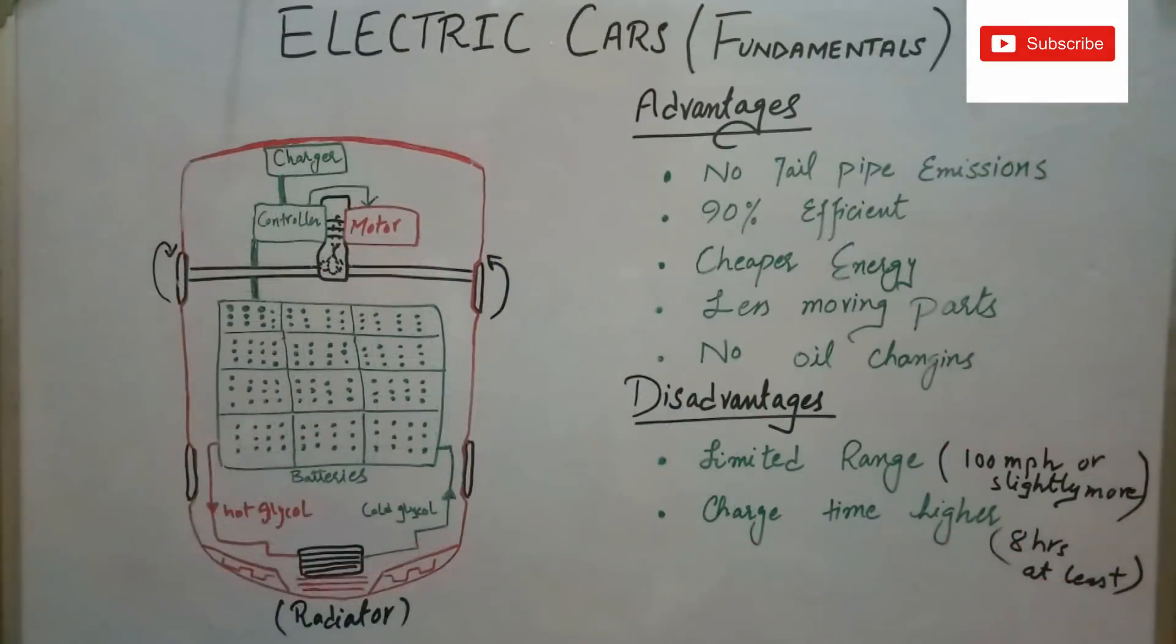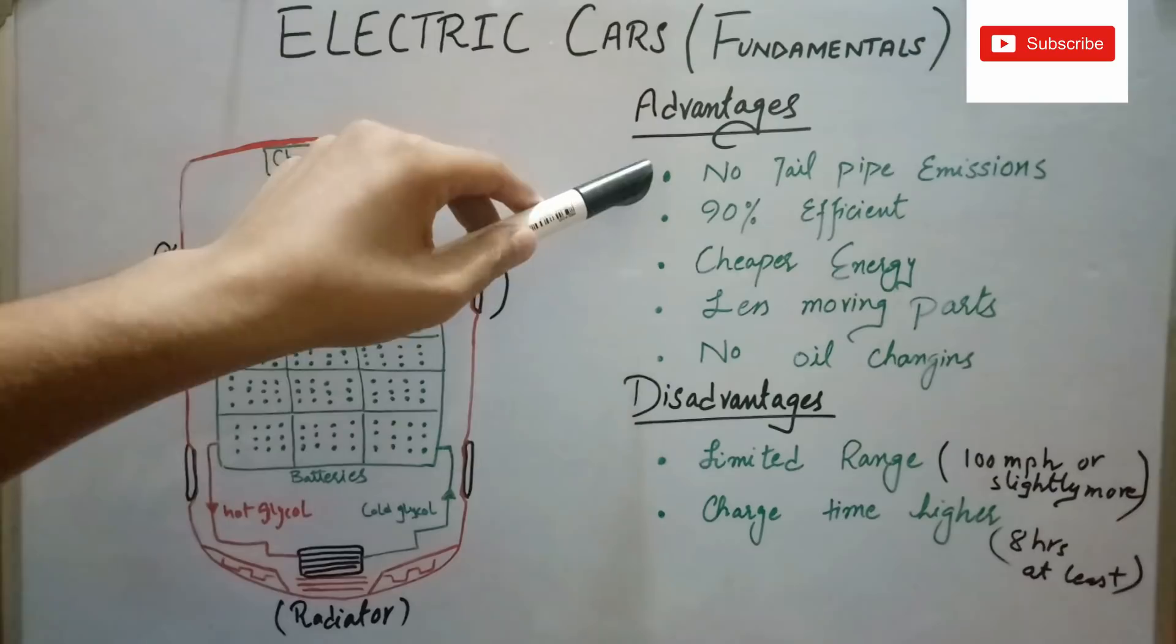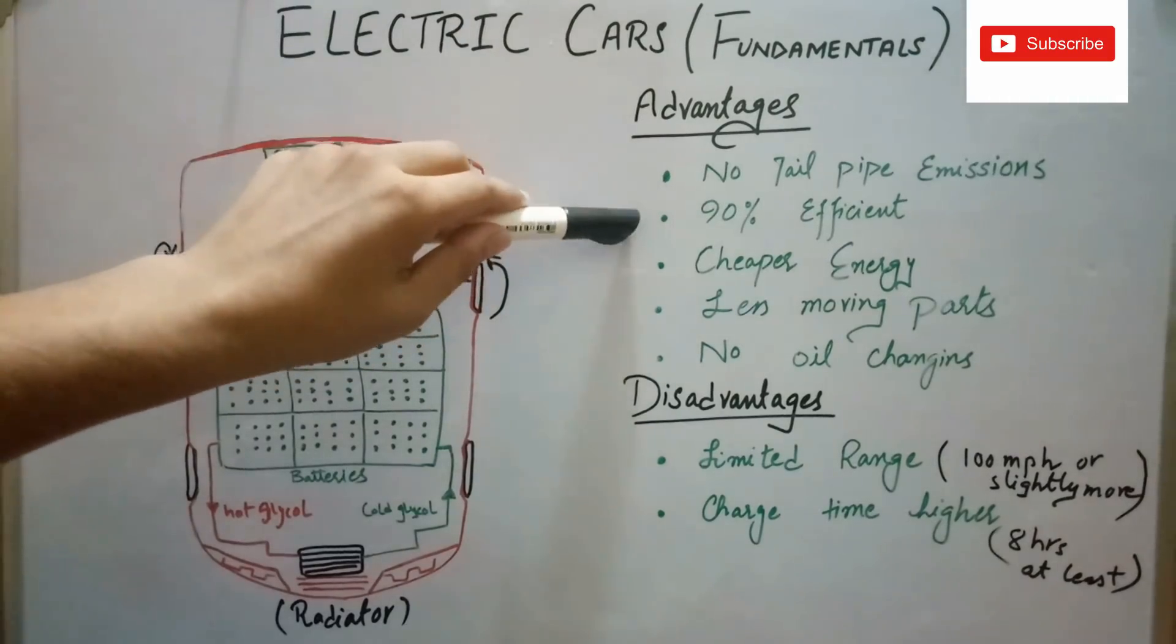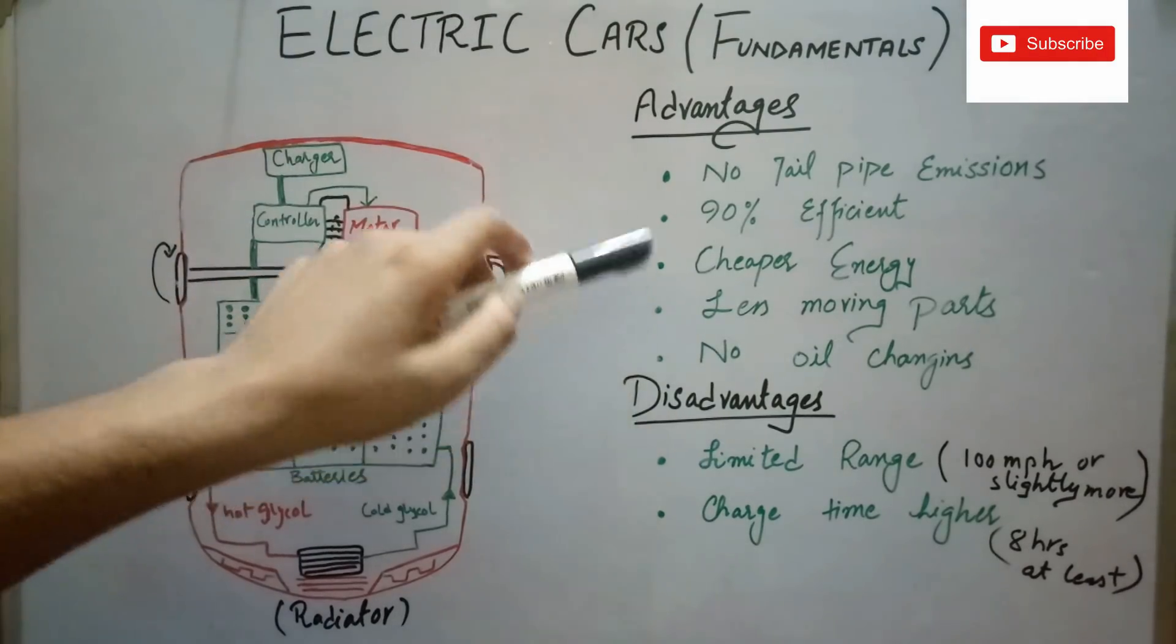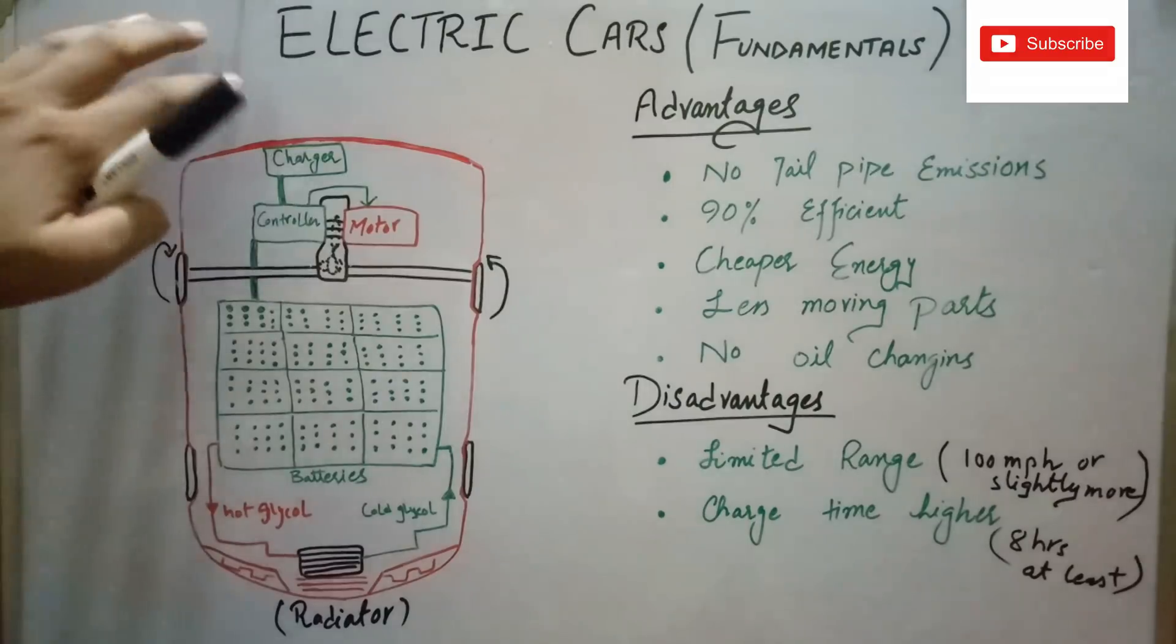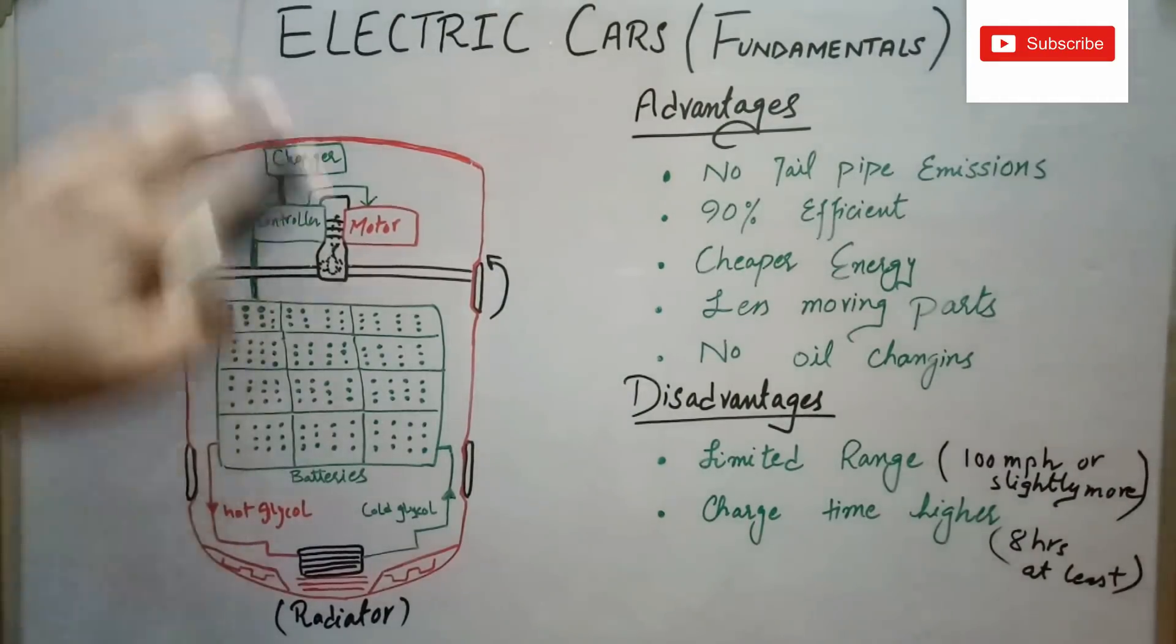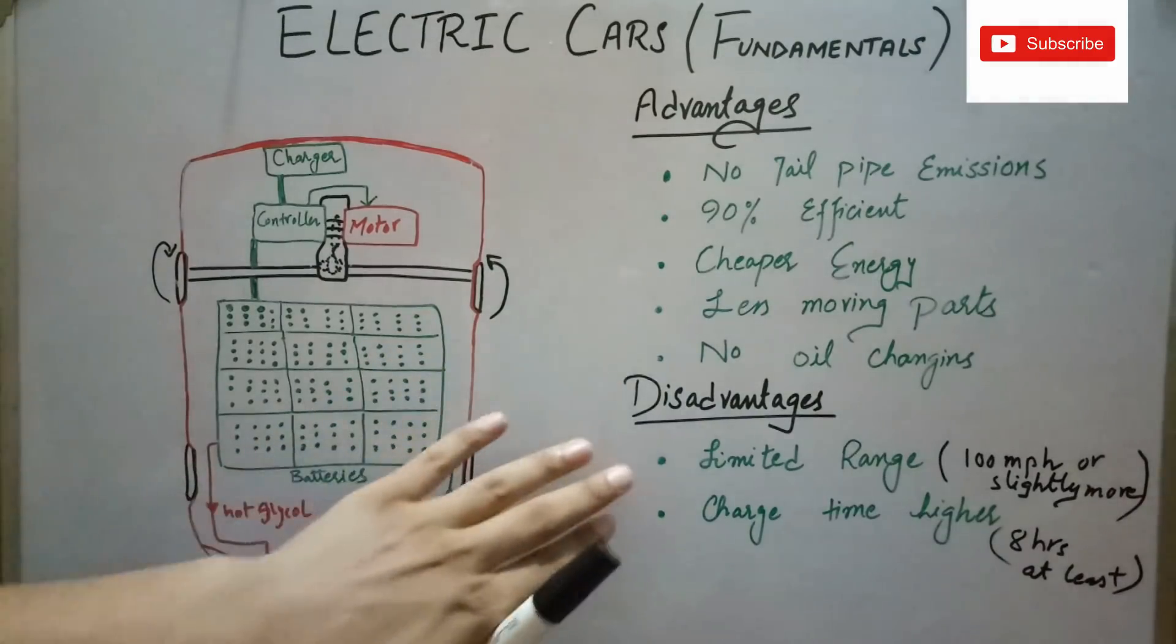The advantages for electric cars include: they have no tailpipe emissions, the air will be cleaner; they are efficient; electricity is cheaper than gasoline and diesel; they have less moving parts, meaning they have no transmissions, clutches, etc., so little mechanical maintenance in electric cars; they have no periodic oil changes.